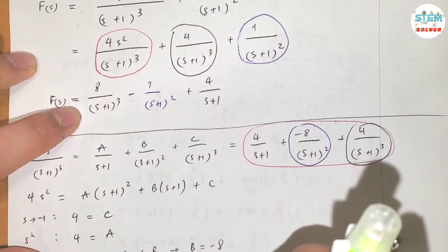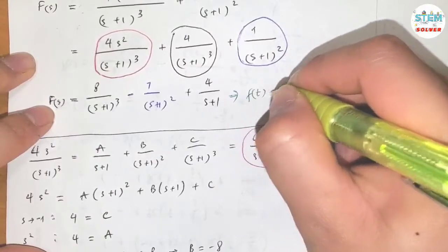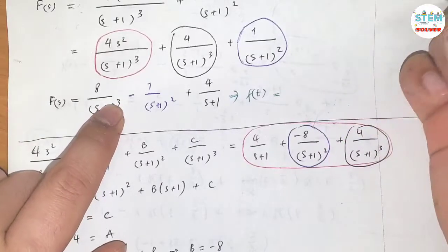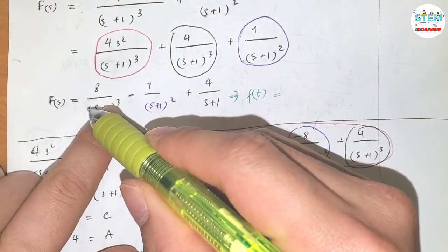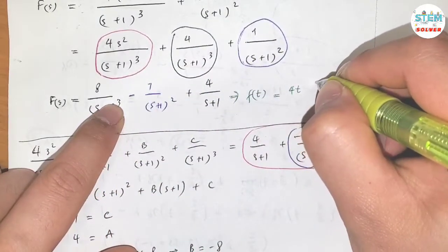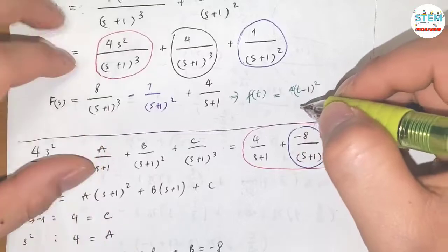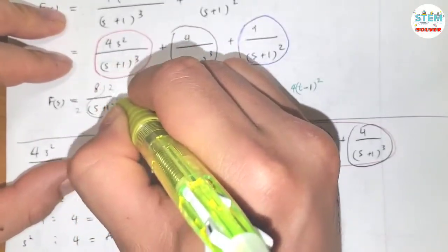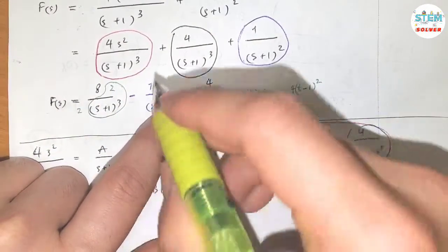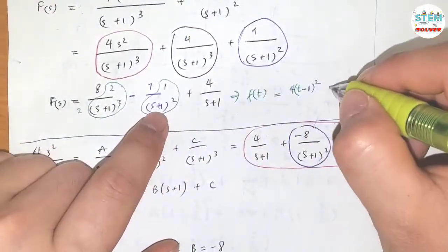Applying the inverse Laplace to both sides: for the 8 over (s plus 1) cubed term, using the shift theorem ignore the plus 1 shift, the inverse of n! over s^(n+1) gives t^n, so here that's (8/2!) × t² — the coefficient is 4, giving 4t².